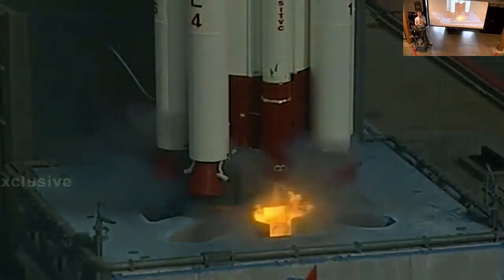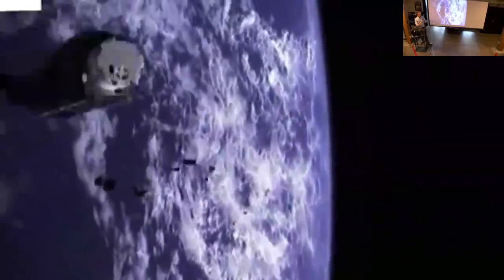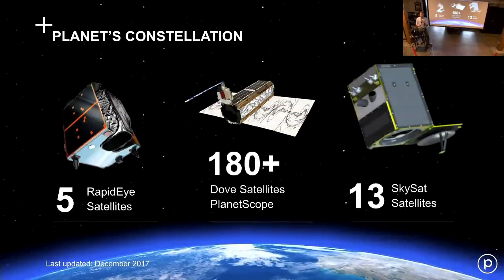I'm going to skip over most of Planet's story today, except to report one thing: last year we launched more than 150 satellites and we've accomplished that first mission — we're imaging the entire Earth every day. This is a video of 88 of our satellites being ejected into space, which makes up a good bulk of that constellation. The Planet constellation is pulling down over a million images with 180 Dove satellites, complemented by RapidEye satellites and 13 SkySat satellites capable of 80-centimeter resolution.